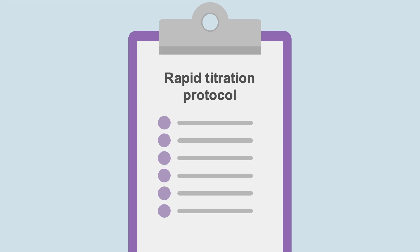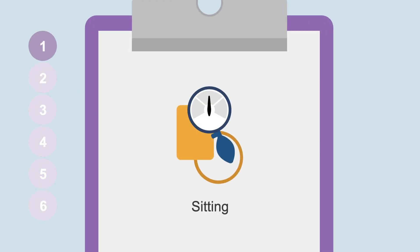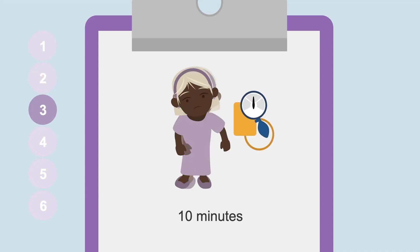For the rapid titration protocol, the patient comes into the office in the off state. The first step is to document blood pressure when sitting down. Then give one milligram. Next, assess motor function and orthostatic blood pressure ten minutes after the injection.